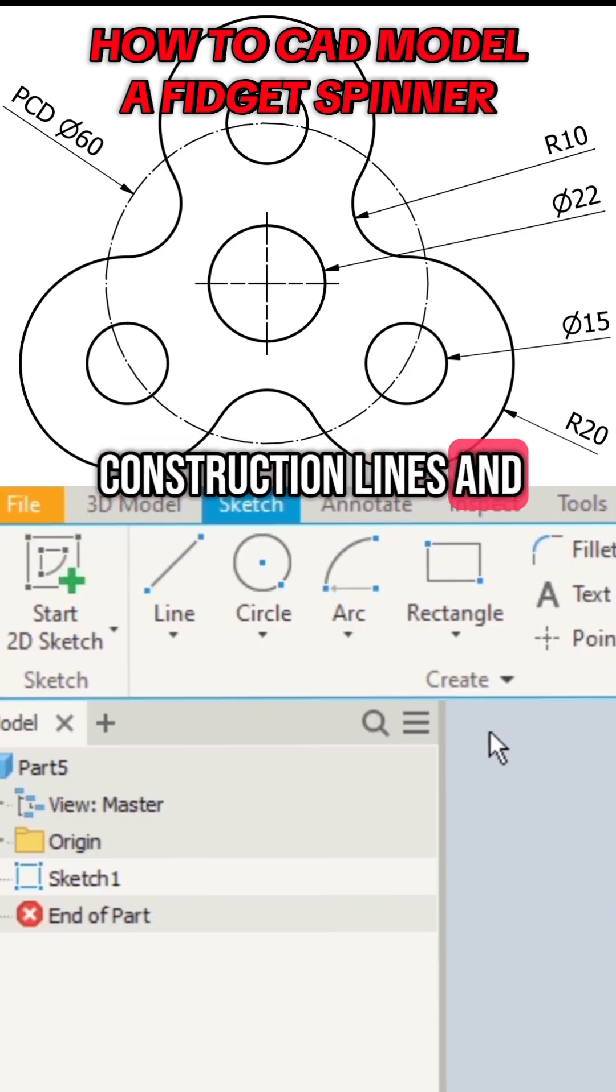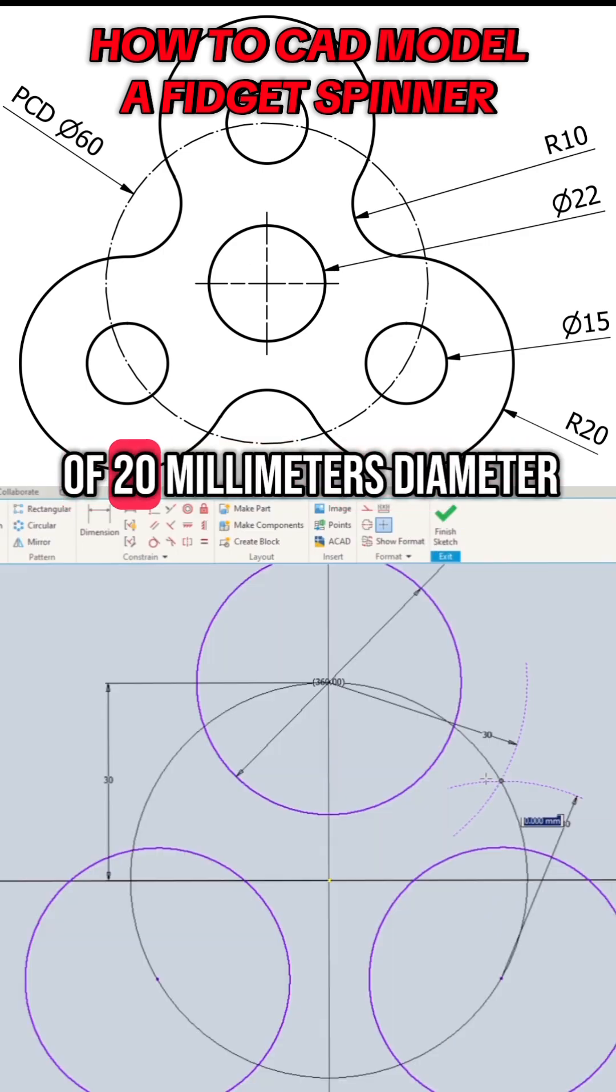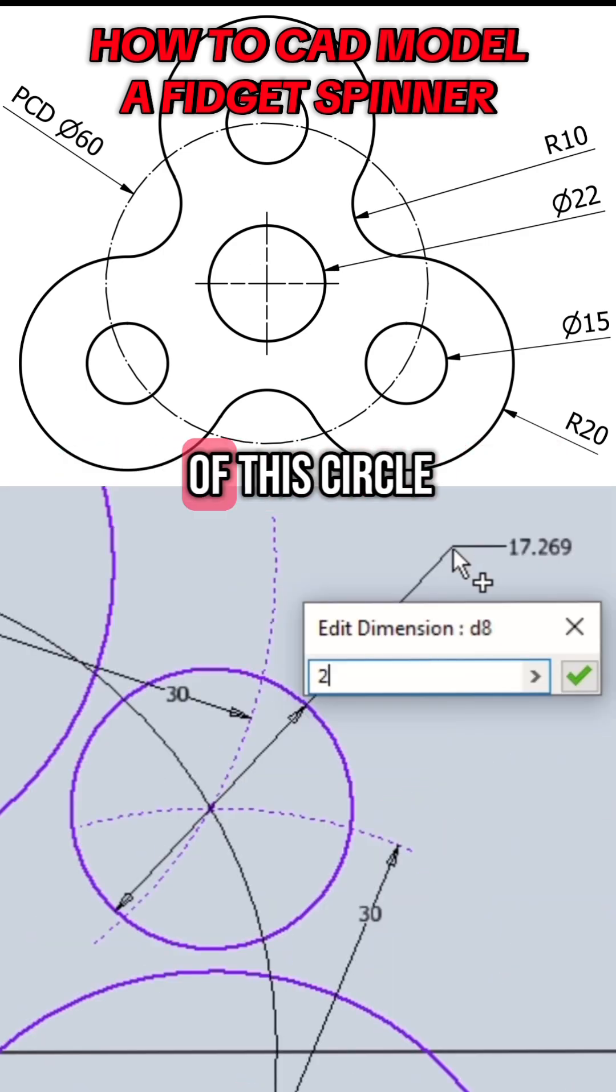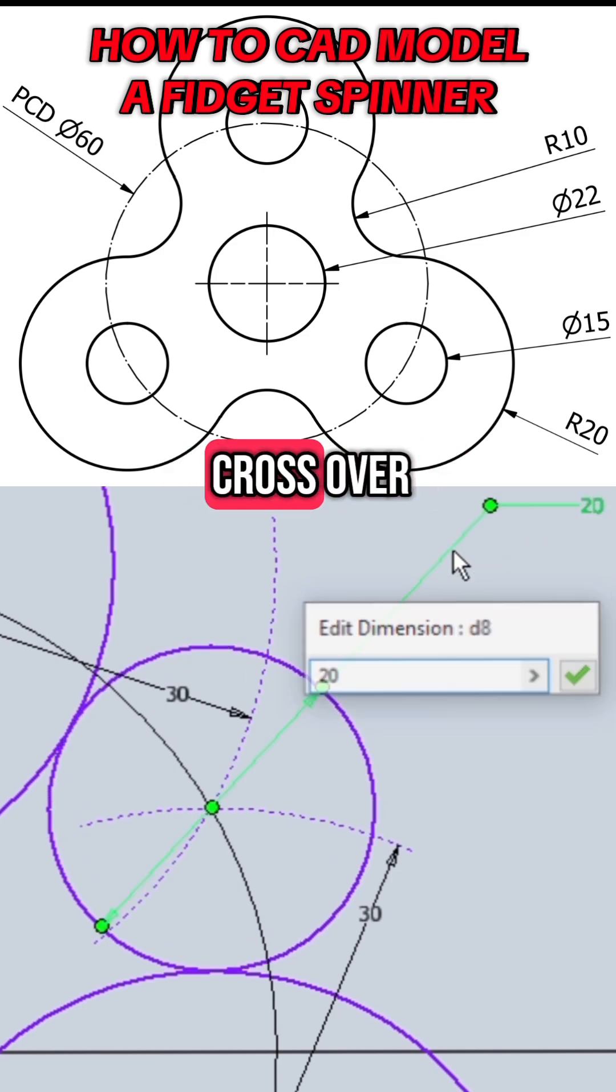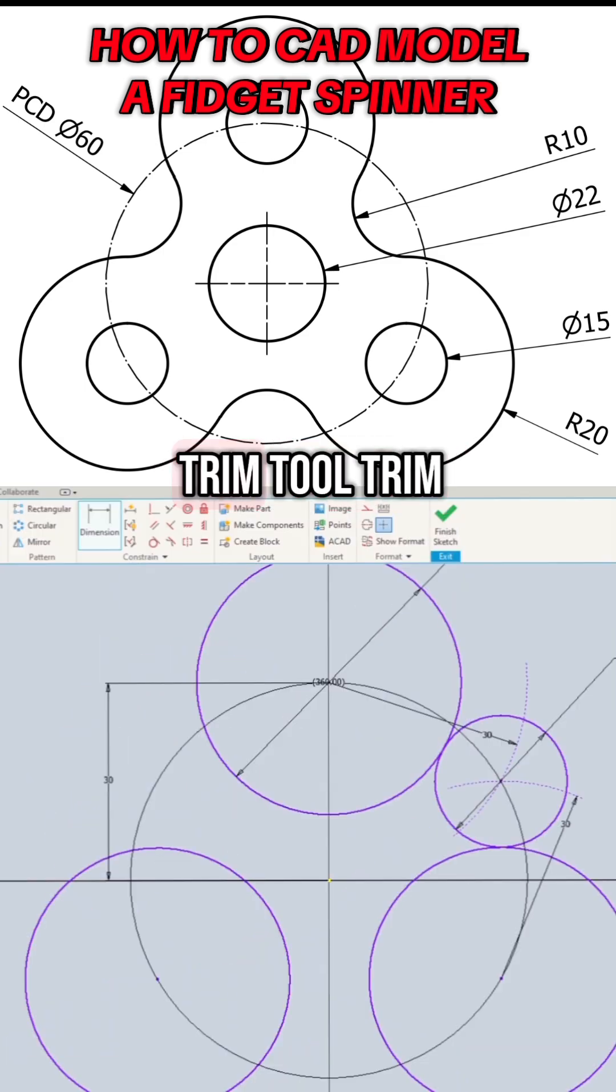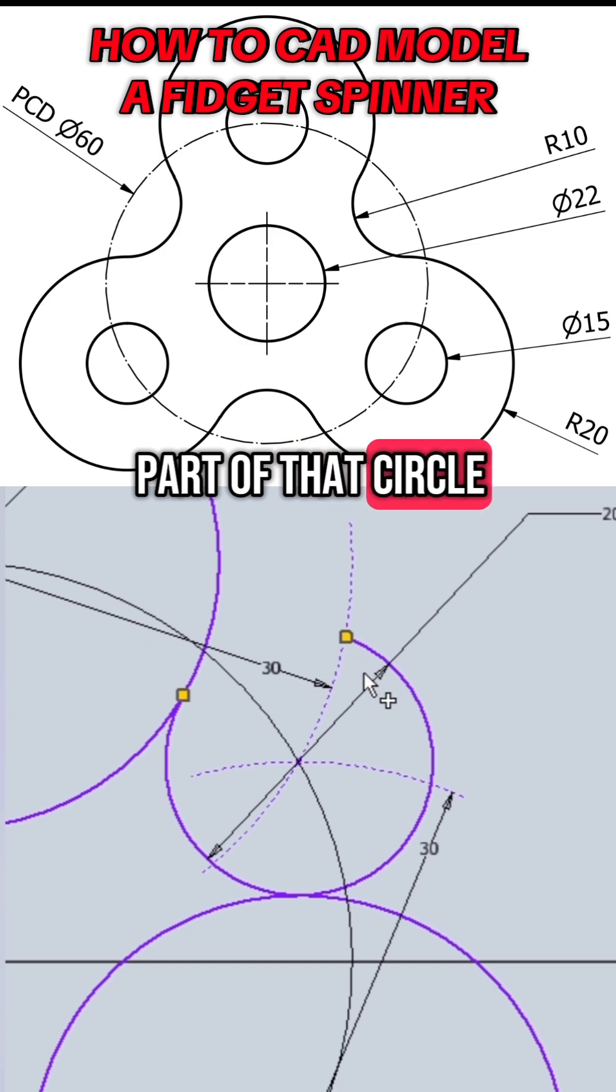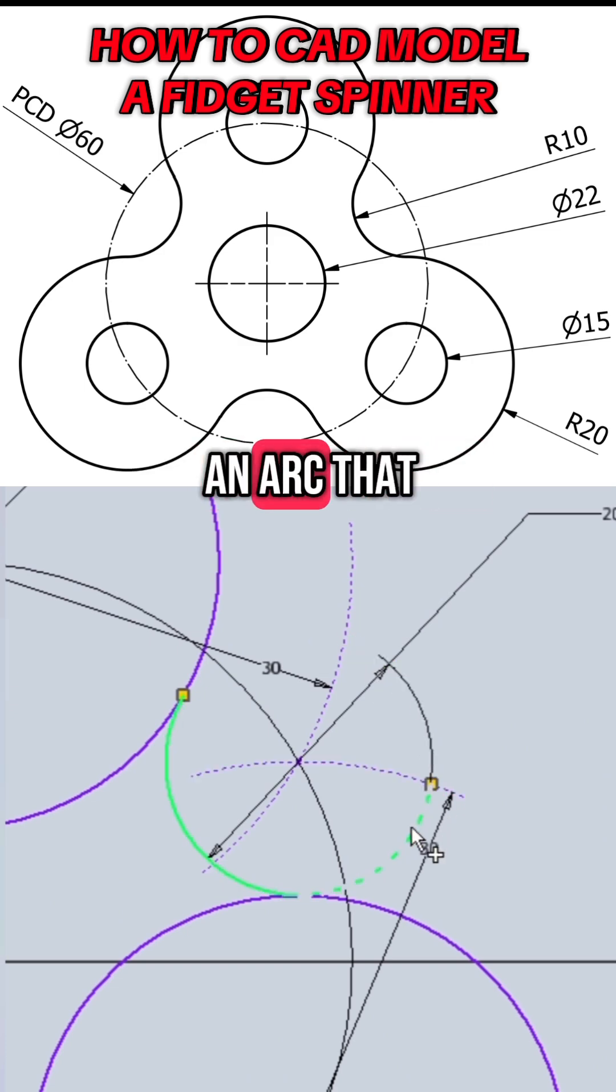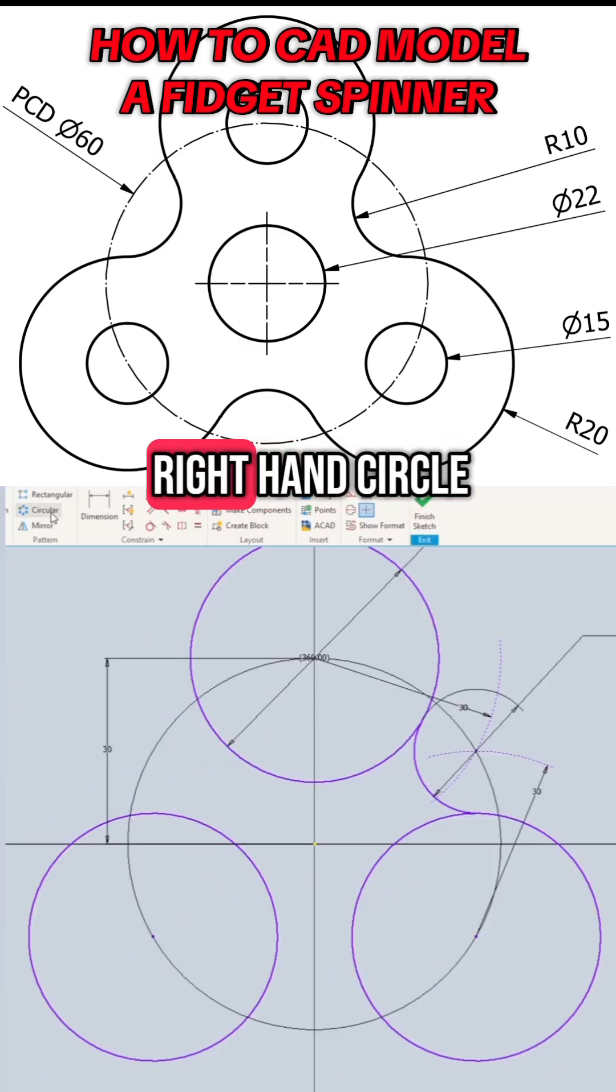Then turn off construction lines and sketch a circle of 20 millimeters diameter. The centre point of the circle should be where the two arcs cross over. Then using the trim tool, trim away any excess part of that circle to leave just an arc that joins the top circle and the right hand circle.